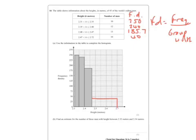So that's the first bit. It then says find an estimate for the number of these men with a height between 2.32 and 2.34. Now, 2.32 to 2.34 is actually half of the first group.